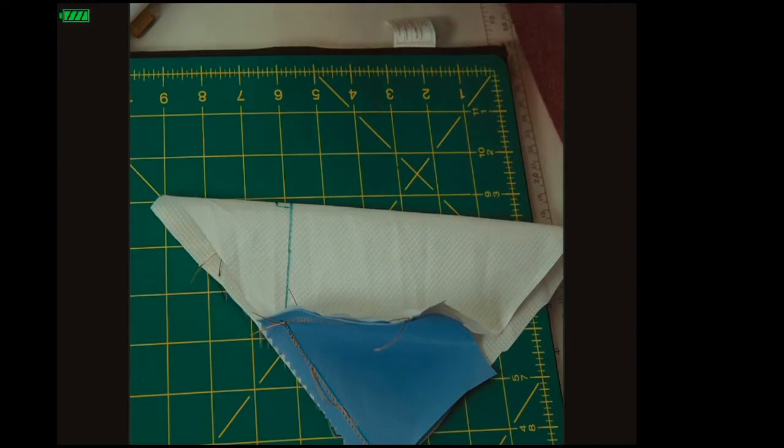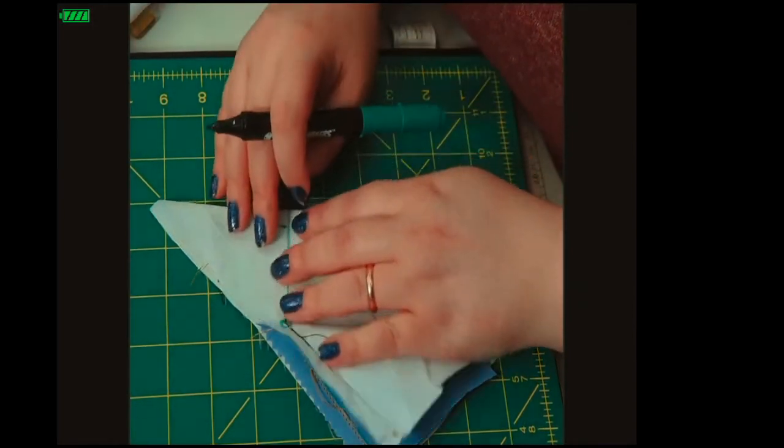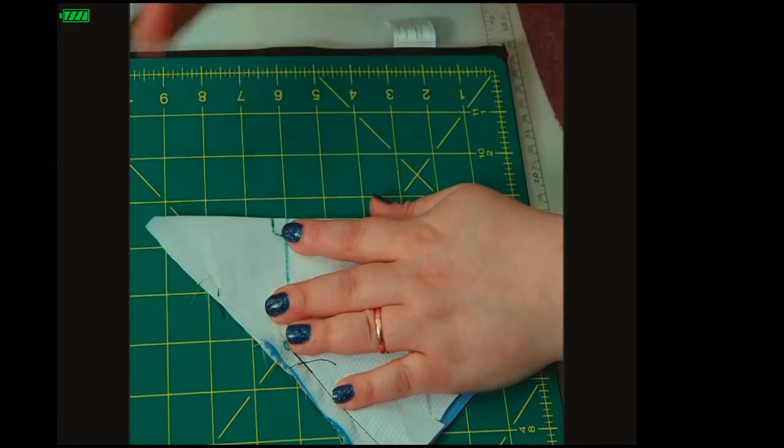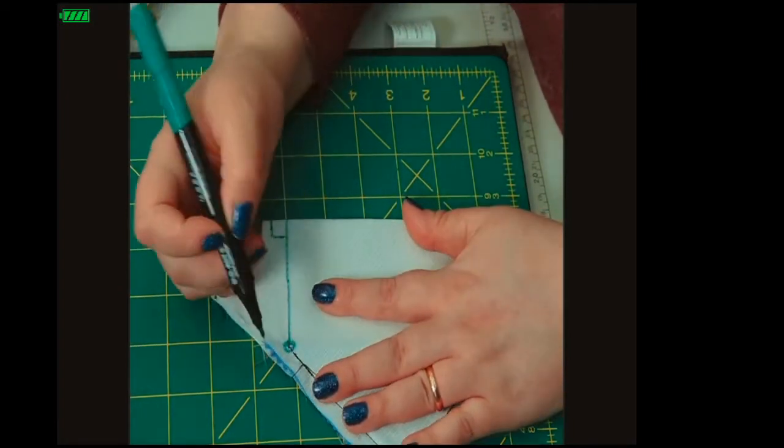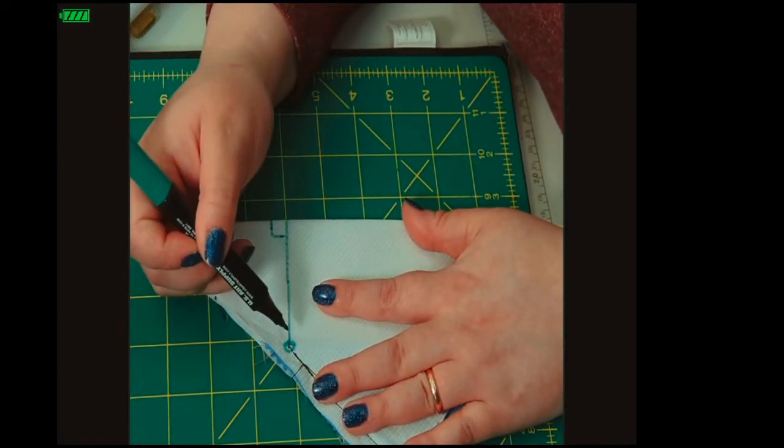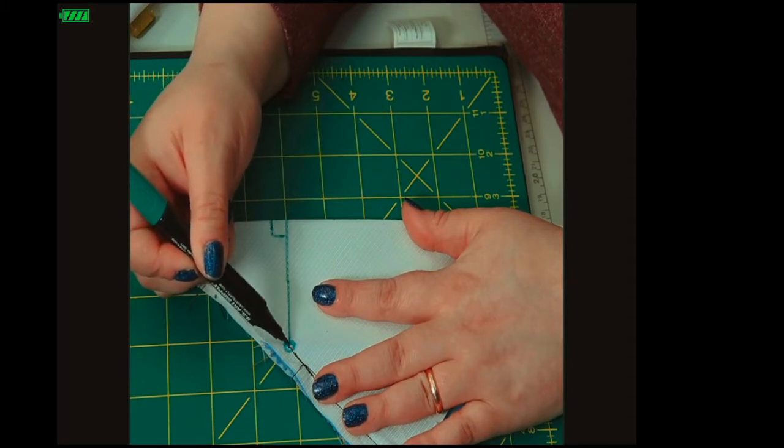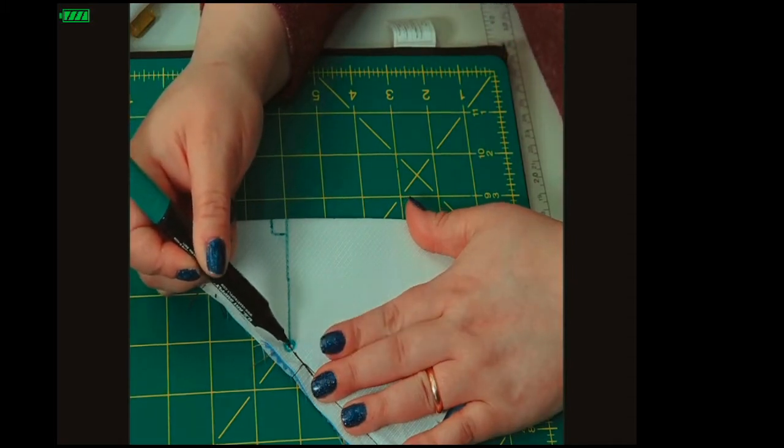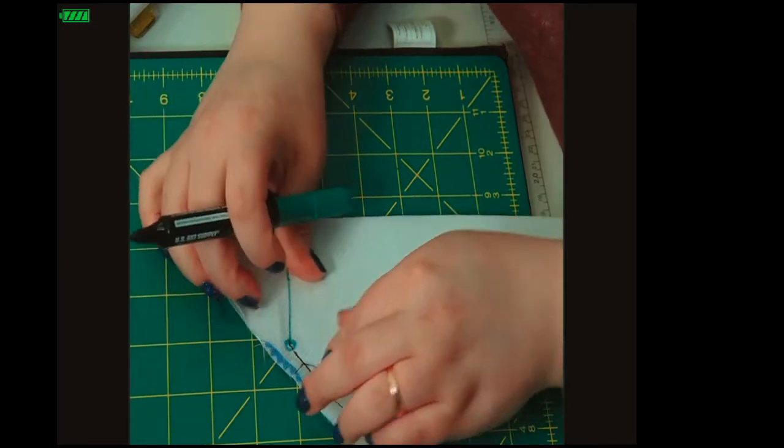Each one shows one-eighth of an inch for each box, so it's really easy to figure out. I'm not trying to find certain lines or triple-checking myself. I know each one is one-eighth of an inch. So now I'm going to go to the sewing machine.